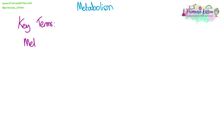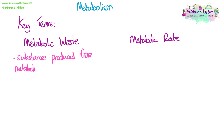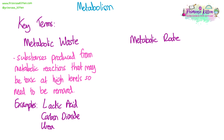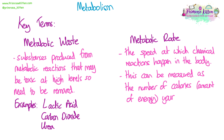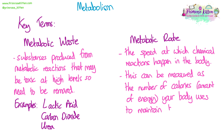There are a couple of key terms involving metabolism that we need to know. Metabolic waste is waste products produced from metabolic reactions — products that could be potentially toxic and cause issues if they build up in the body, so they need to be removed. The metabolic rate is the speed at which chemical reactions are happening in the body, measured as the number of calories or amount of energy your body uses to maintain all living processes when you are at rest — your basic metabolic rate.